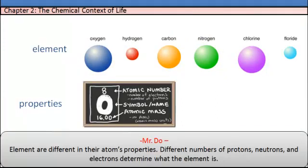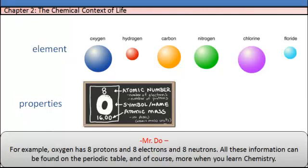Elements are different in their atoms' properties. Different numbers of protons, neutrons, and electrons determine what the element is. For example, oxygen has 8 protons and 8 electrons and 8 neutrons. All this information can be found on the periodic table, and of course more when you learn chemistry.